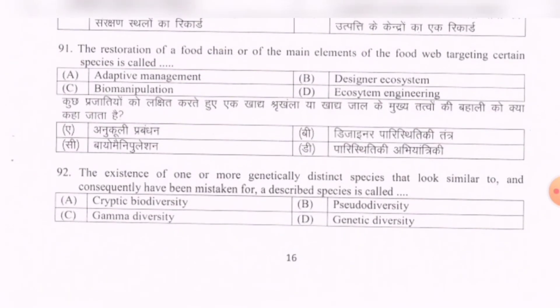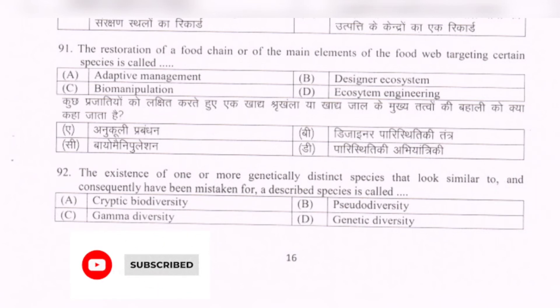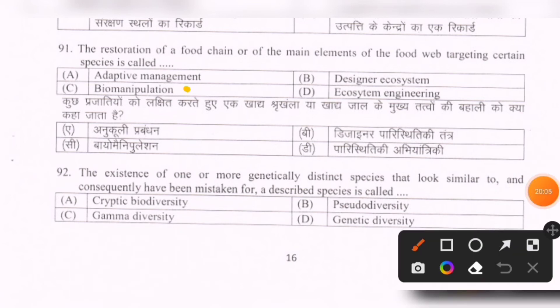Next question: The restoration of a food chain or of the main elements of the food web targeting certain species is called — options are: adaptive management, designer ecosystem, biomanipulation, ecosystem engineering. The correct option is C — biomanipulation.